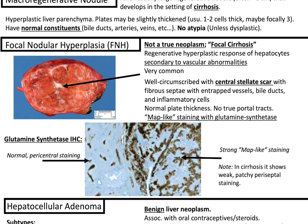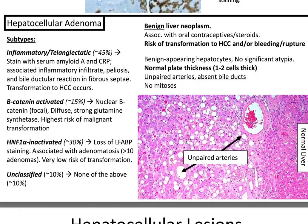Focal nodular hyperplasia: not a true neoplasm, looks like focal cirrhosis, secondary to vascular abnormalities. Grossly you'll see the central stellate scar. With glutamine synthetase IHC, you'll have map-like or geographic staining. Hepatocellular adenoma: benign liver neoplasm with risk of transformation to HCC and/or bleeding or rupture. You'll have normal plate thickness, unpaired arteries, and absent bile ducts. Four main subtypes: inflammatory/telangiectatic, beta-catenin activated, HNF1-alpha inactivated, and unclassified.